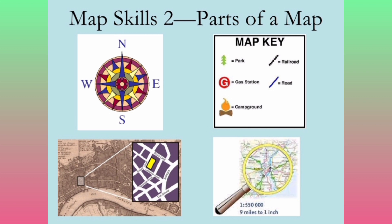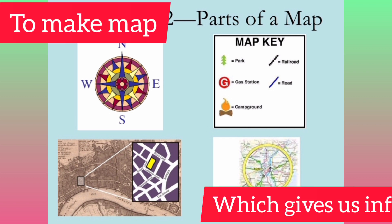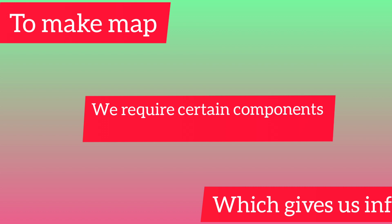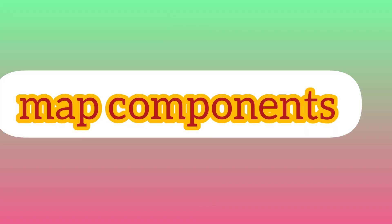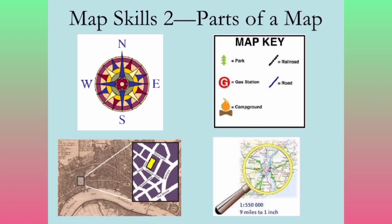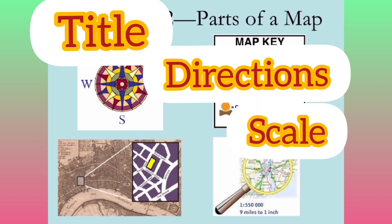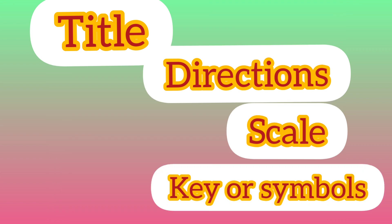In the process of representing the spherical features on a piece of paper, we require certain components. These are called map components. They are: title, direction, scale, and key or symbols.